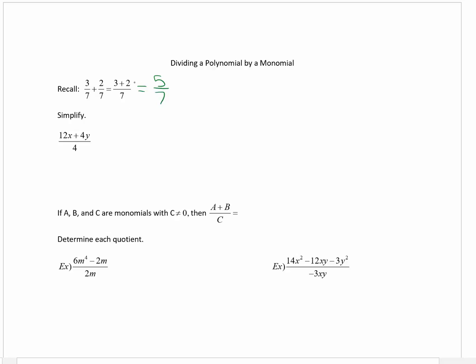But what I would like to be able to do now is when I see something like three plus two divided by seven, to know that I can separate them into two fractions: three sevenths plus two sevenths. Well I can do something similar with polynomials also. So let's simplify. What I would like to do is to separate them into two fractions and then I'm going to simplify each fraction.